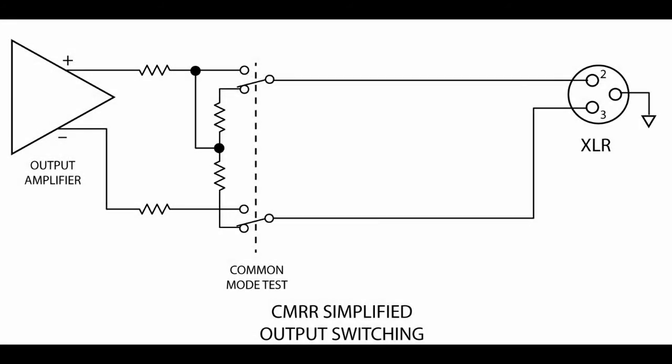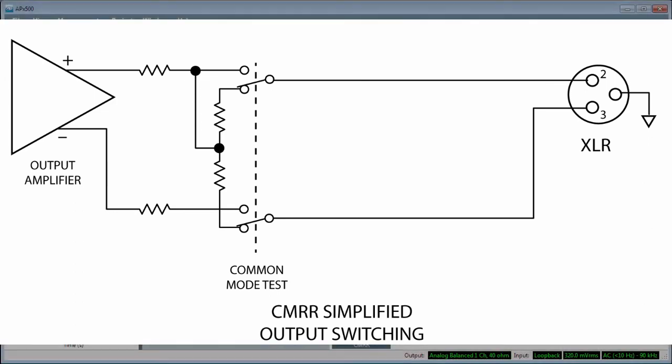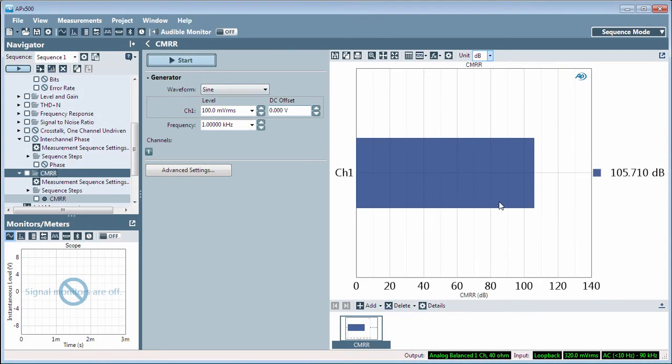Then, the APX output is switched to common mode, and a second measurement is made. The ratio of the two measurements is displayed as a decibel or an XY result.